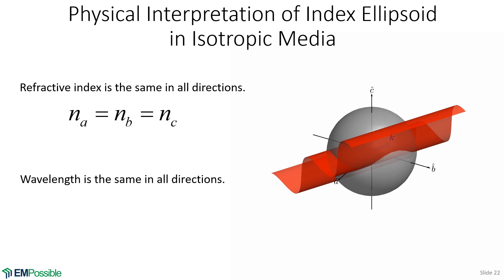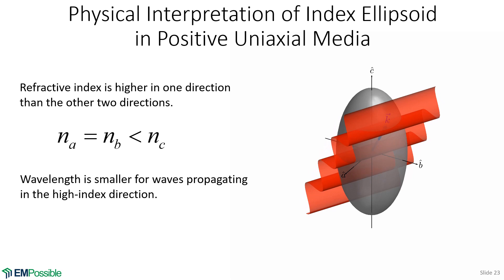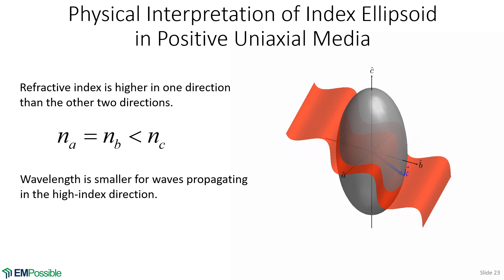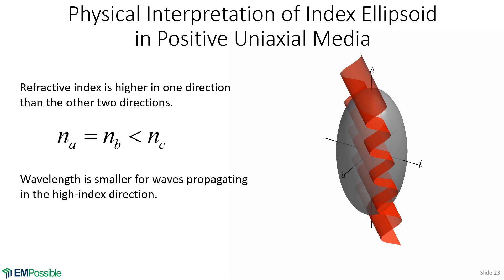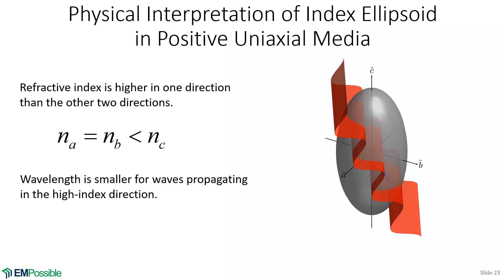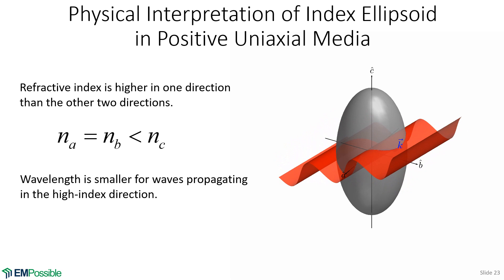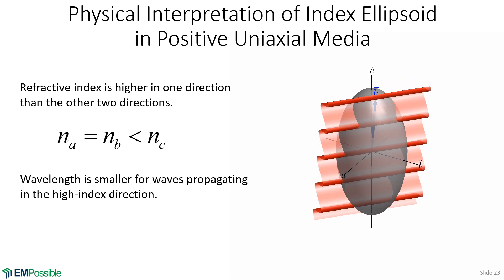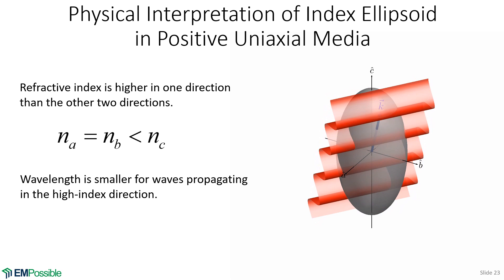It gets more interesting for a uniaxial medium. This is positive uniaxial because the extraordinary axis is larger than the two ordinary axes. When the wave is near vertical it travels more slowly and is much more compressed — the wavelength is compressed. However, when propagating in the a-b plane it travels faster because the refractive index is lower, and the wavelength is stretched out. As the wave changes direction, both its speed and wavelength change — much more interesting than the isotropic case.